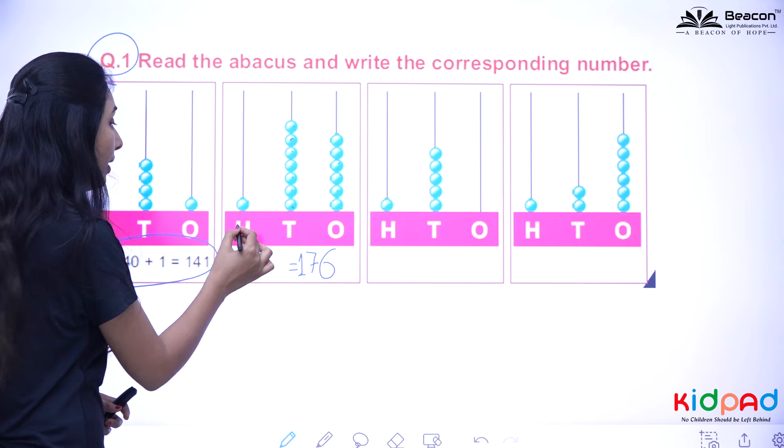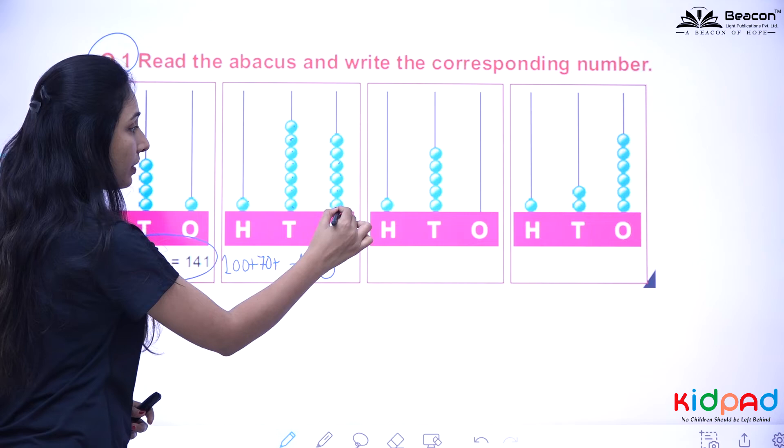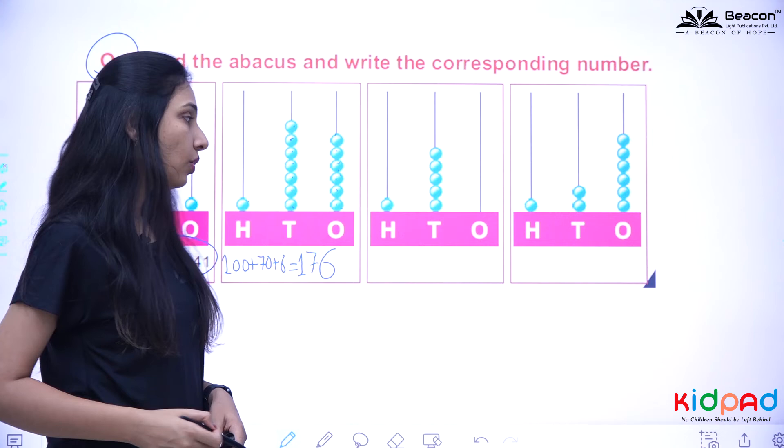You can write this in expanded form. You can write 100 plus 1, 2, 3, 4, 5, 6, 7, that is 70, plus 1, 2, 3, 4, 5, 1, 2, 3, 4, 5, 6, plus 6. So 100 plus 70 plus 6 equals 176.